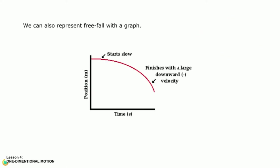We can also represent free fall with a graph. Observe that the line on the graph curves. A curved line on a position versus time graph signifies an accelerated motion. Since a free falling object is undergoing an acceleration of g equals 9.8 meters per second per second, it would be expected that its position-time graph would be curved. A further look at the position-time graph reveals that the object starts with a small velocity and finishes with a large velocity. Since the slope of any position versus time graph is the velocity of the object, the small initial slope indicates a small initial velocity and the large final slope indicates a large final velocity.